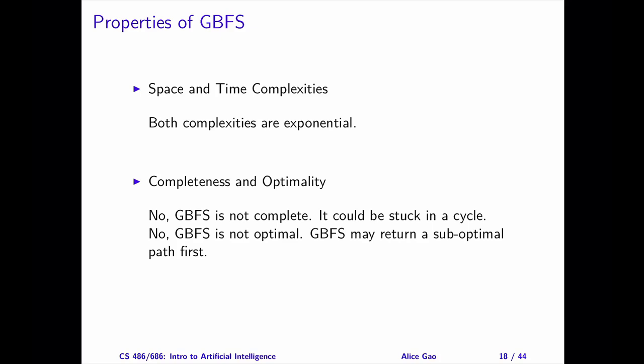For the not optimal example, again, construct the graph with two paths. Both paths start from the same initial state and end at the same goal state. Then, design the heuristic function such that the algorithm will find and return the suboptimal path first. Try to make your examples as simple as possible. In my opinion, if you can come up with the simplest examples, it shows that you have really understood the algorithm.